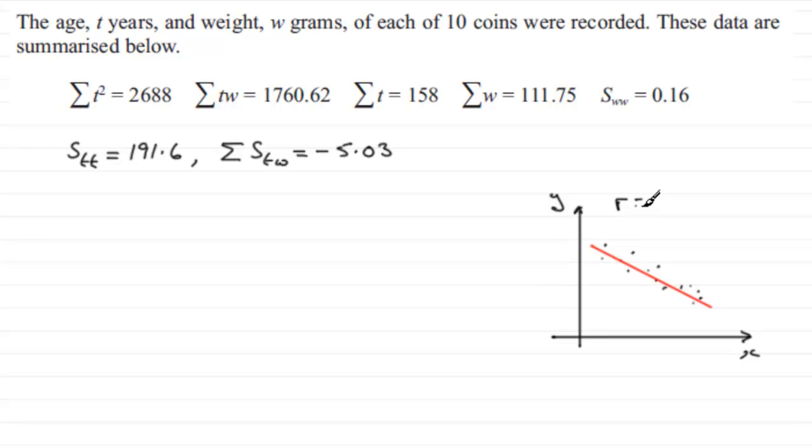R is a number that goes between minus 1 and 1. When it's minus 1, you're on a perfect negative slope here, all the points would lie on that line. If it was 1, you'd have a line going that way, all the points would be on it.